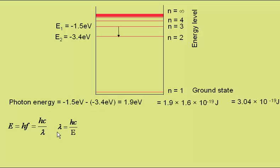Rearranging to find the wavelength, we find that lambda equals HC over the photon energy E. Putting the numbers in, this is Planck's constant.